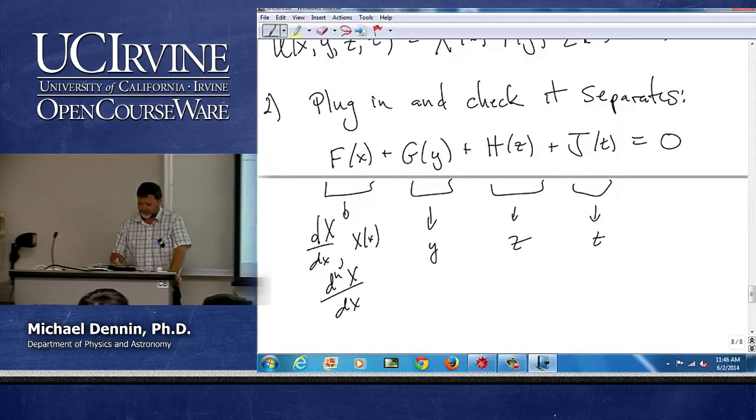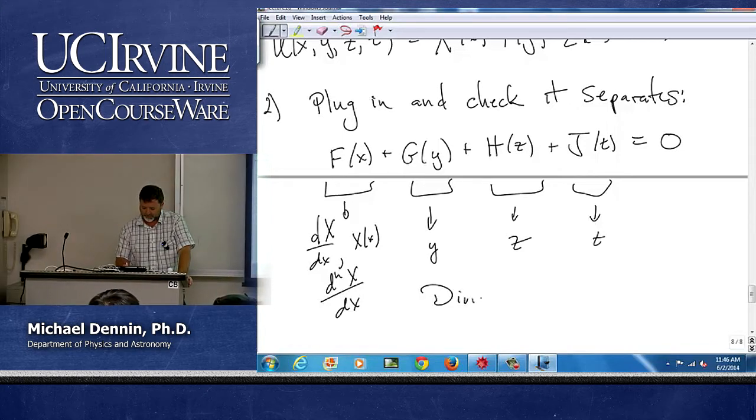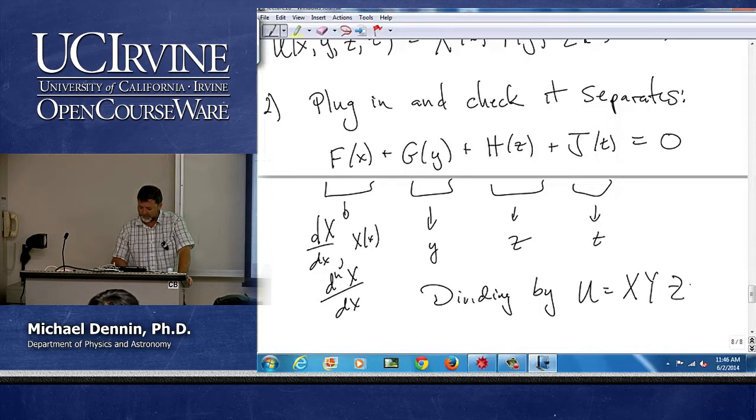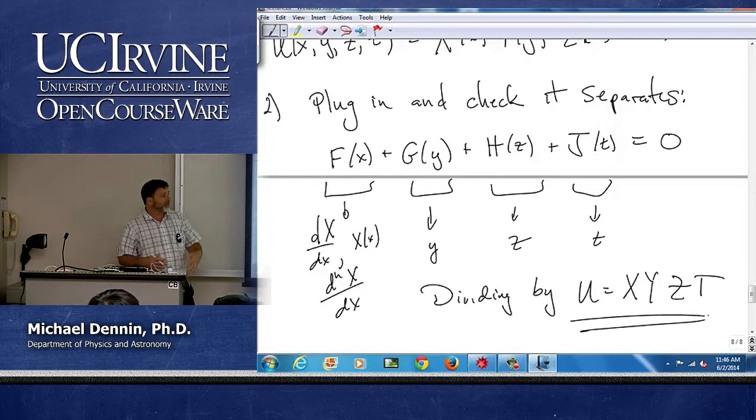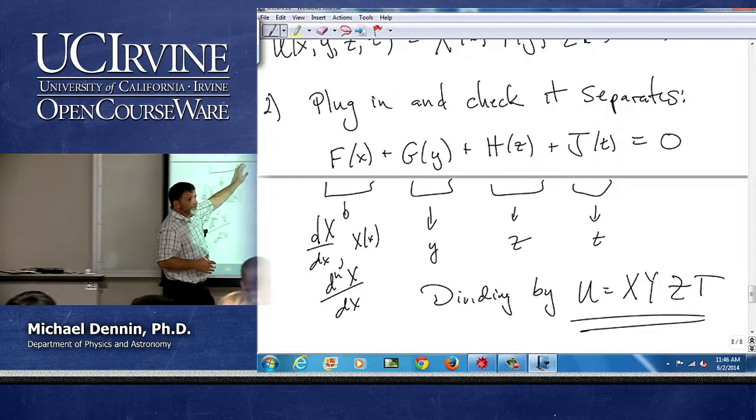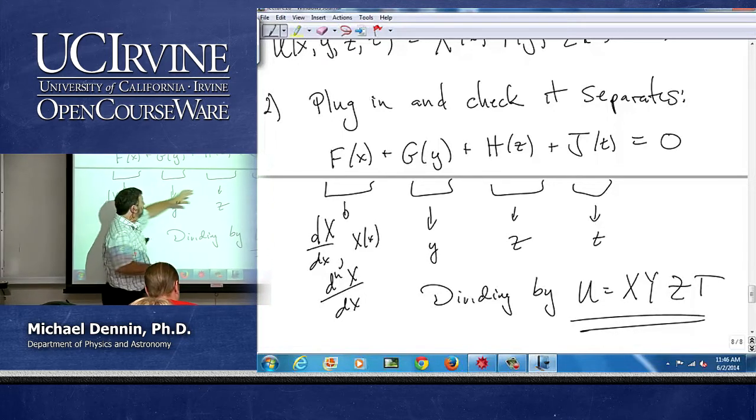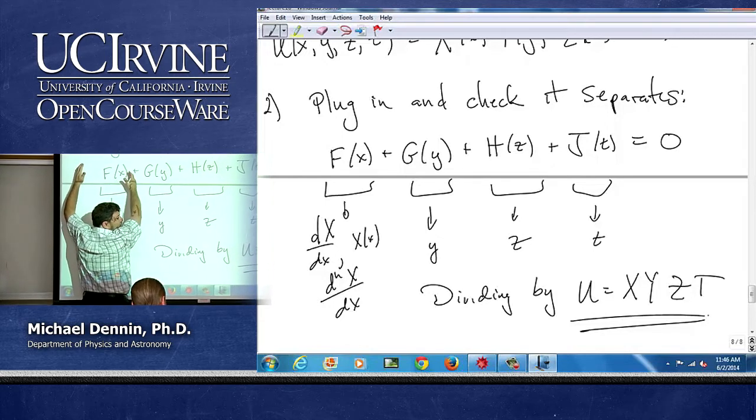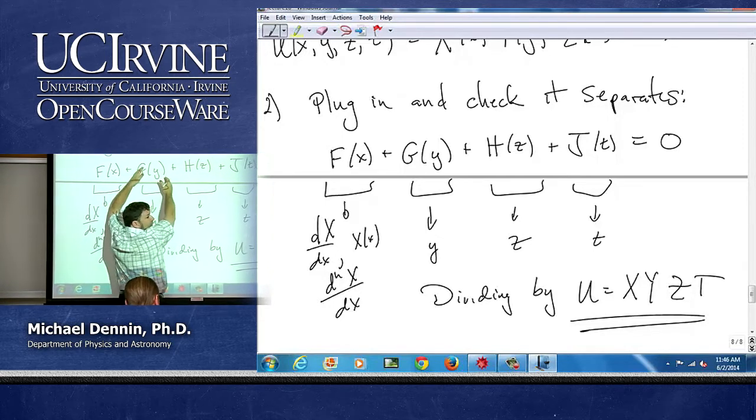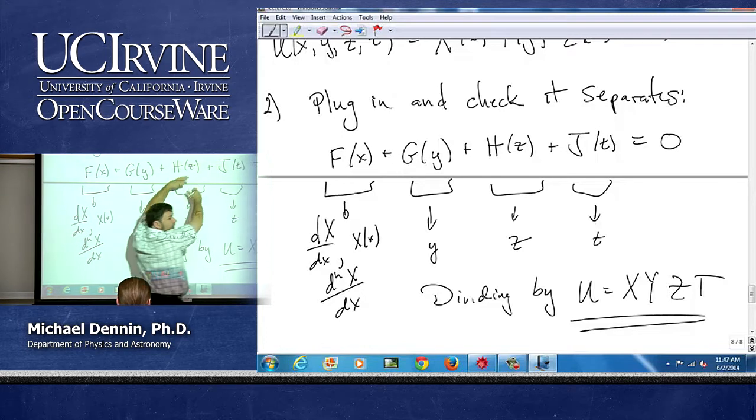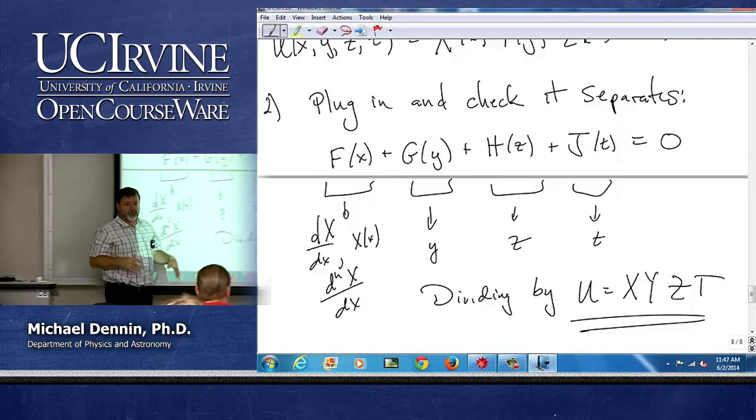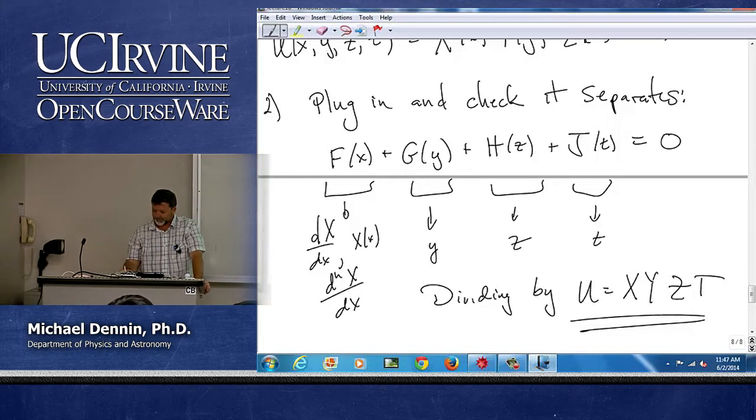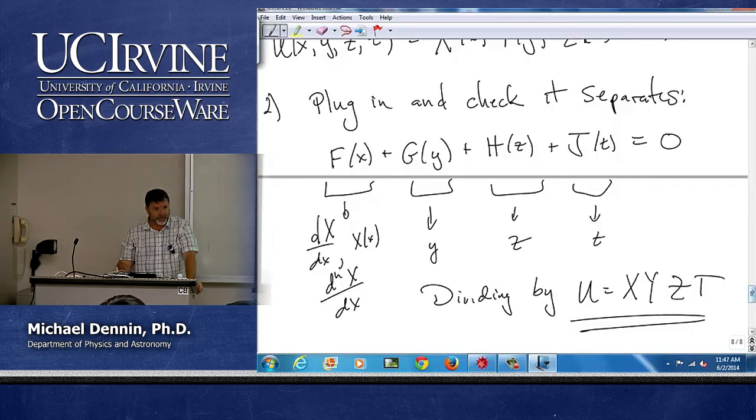So dividing by u equal to x, y, z, t is often the key step to generate something that looks like this. But you're going to have a, and this function, it could be a bunch of terms. And this function could be a bunch of terms. And this function could be a bunch of terms. But you put them all together and you get that. Are we okay with that step?